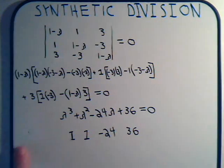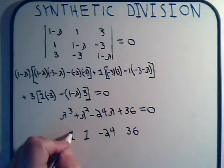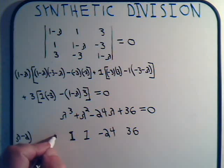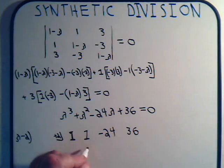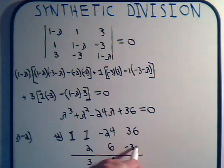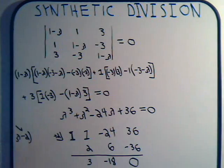How about lambda minus 2? We'll try that out. We write plus 2 here, and down here we write plus 2. Add and multiply. This is 3 times 2 is plus 6. This will be minus 18 times plus 2 is minus 36. Add these up, we get zero. So this is a factor.